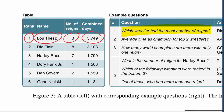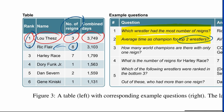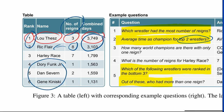Which wrestler had the most number of reigns? For that, you go to the number of reigns column, mentally sort them, and find that 8 is the highest — so Ric Flair is the wrestler you're looking for. Second question: the average time as a champion for the top two wrestlers. We go to the top two wrestlers by rank and compute the average of those two numbers. There are also questions like which wrestlers were ranked in the bottom three — the answer is all of those — and out of these, who had more than one reign, which is Dan Severn.